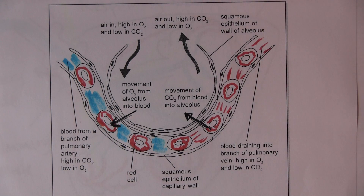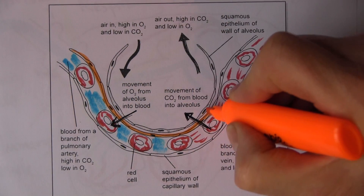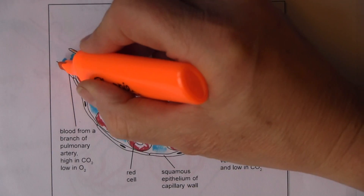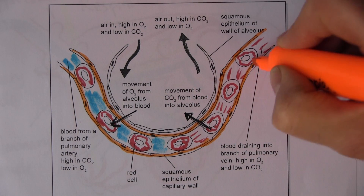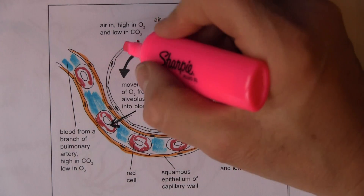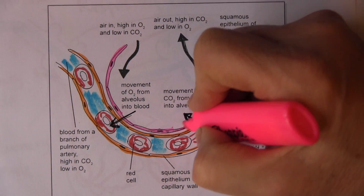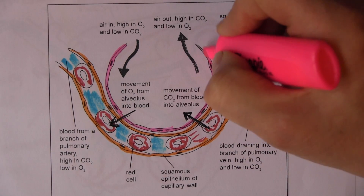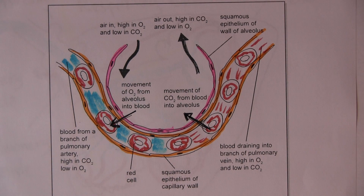Drawing the walls of the pulmonary capillary in orange, and the thin wall of the alveolus in pink — healthy lungs are pink. The alveolar walls are lined with squamous tissue, and the process of gaseous exchange takes place between the alveolar air sac and the blood.